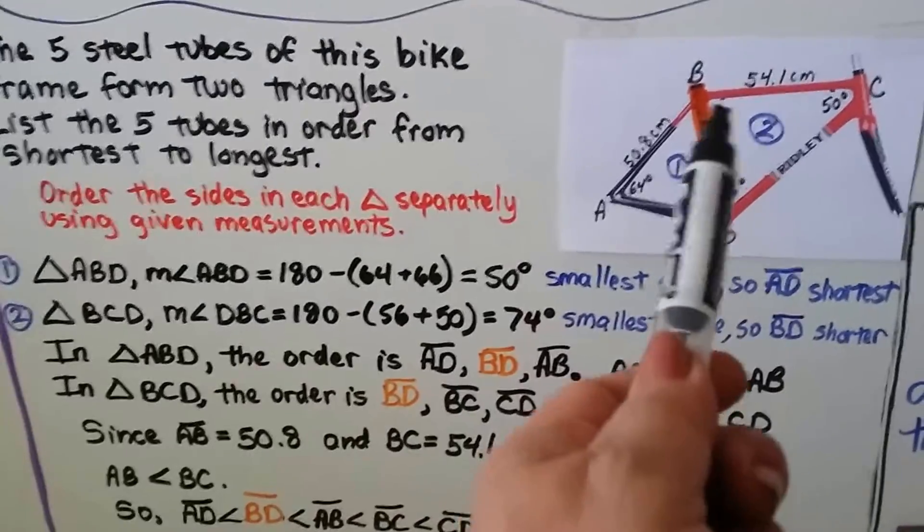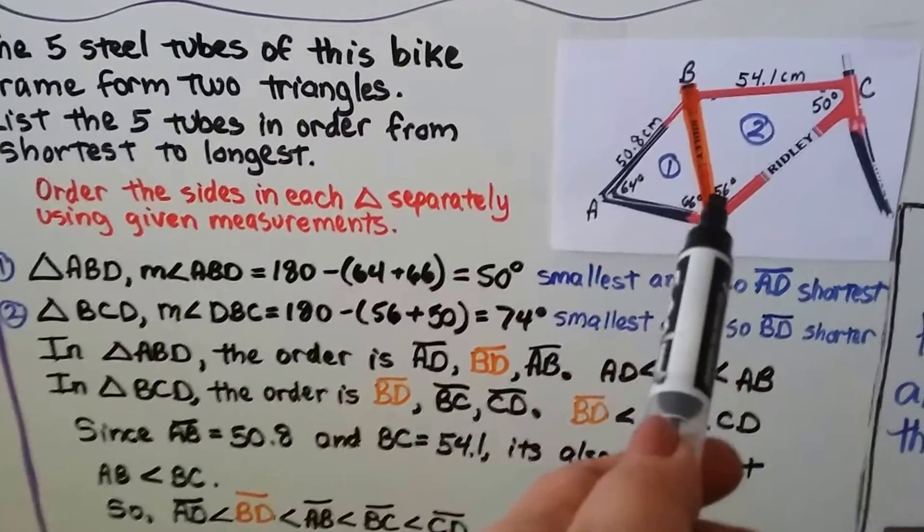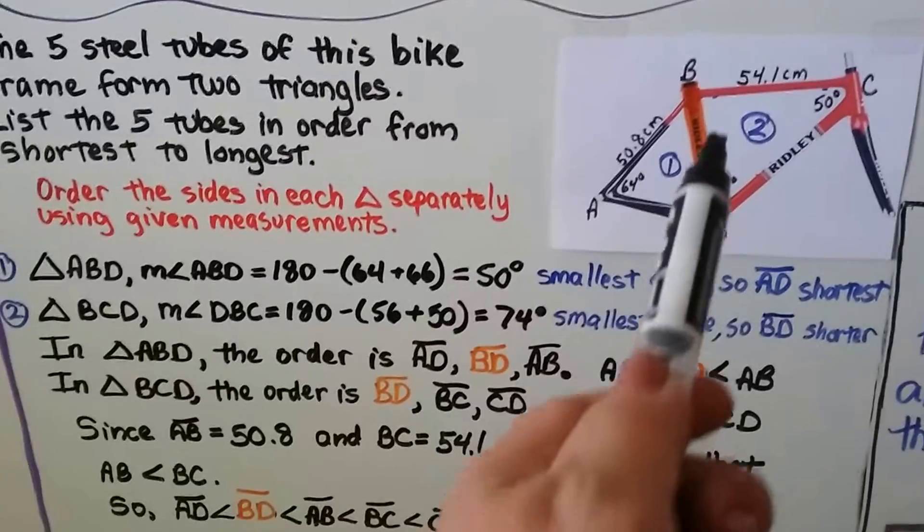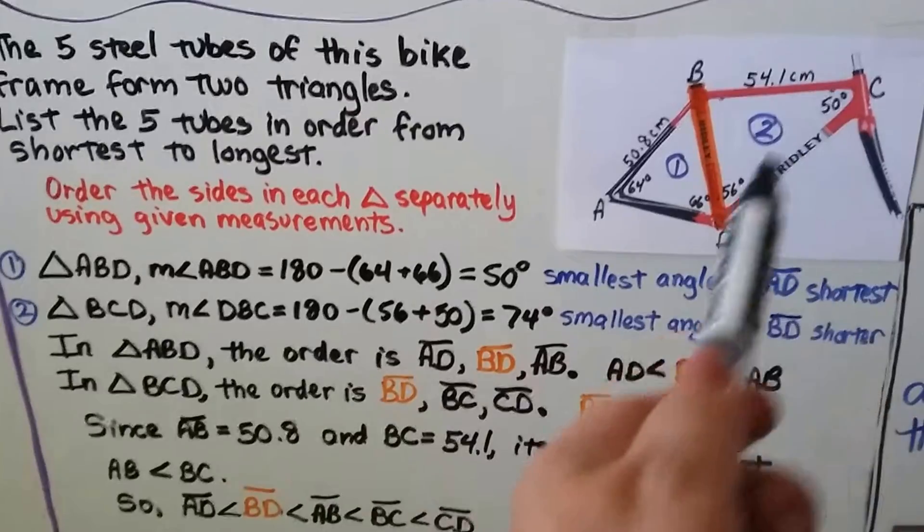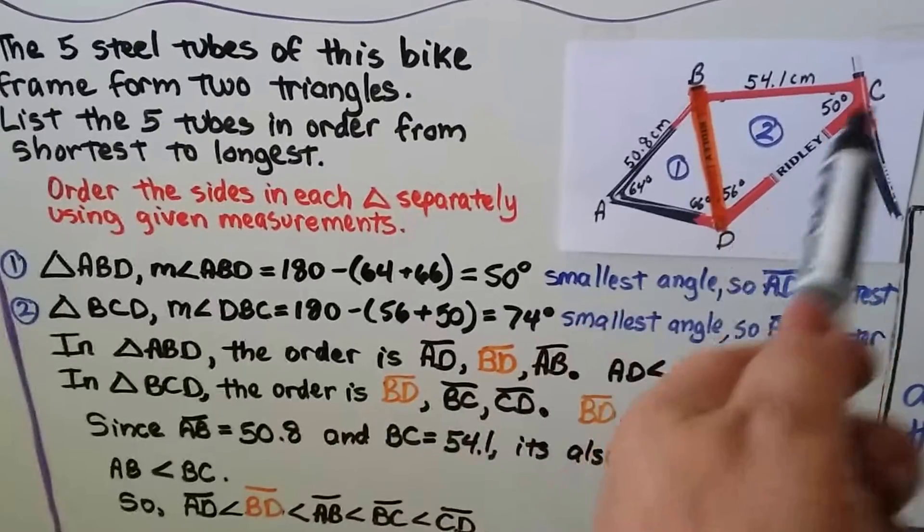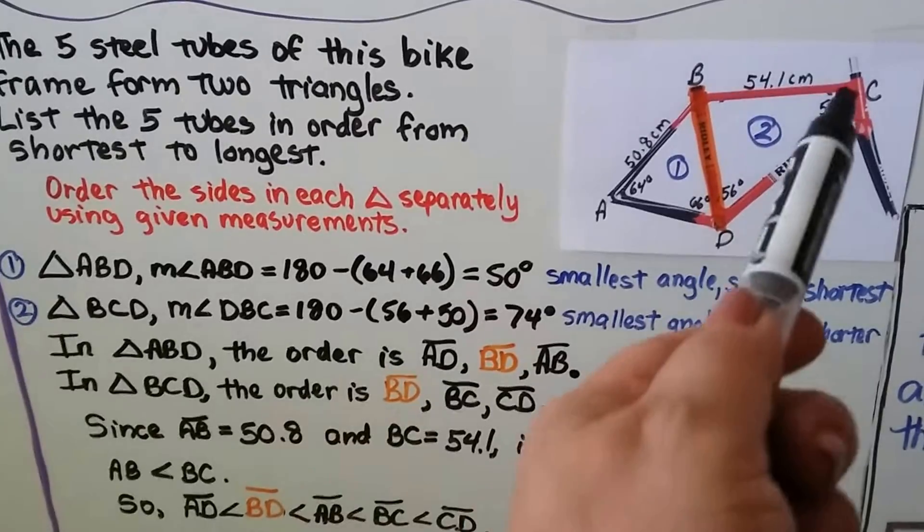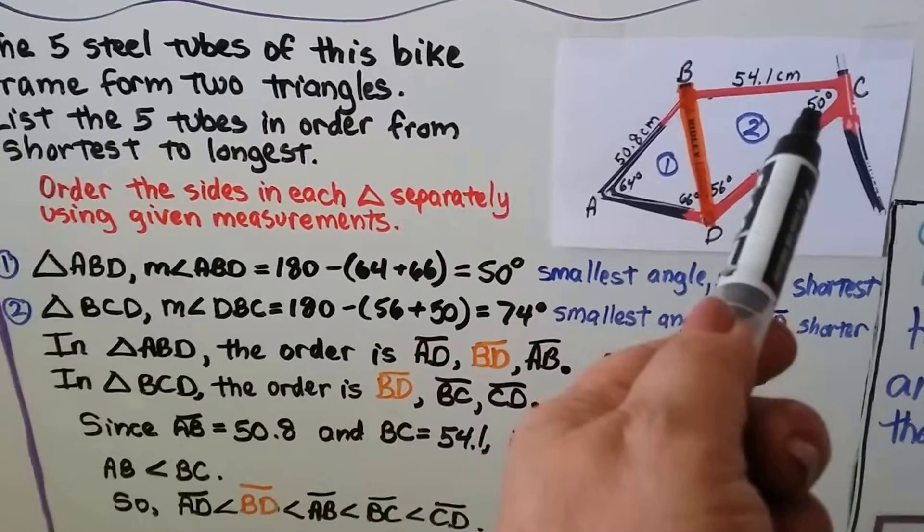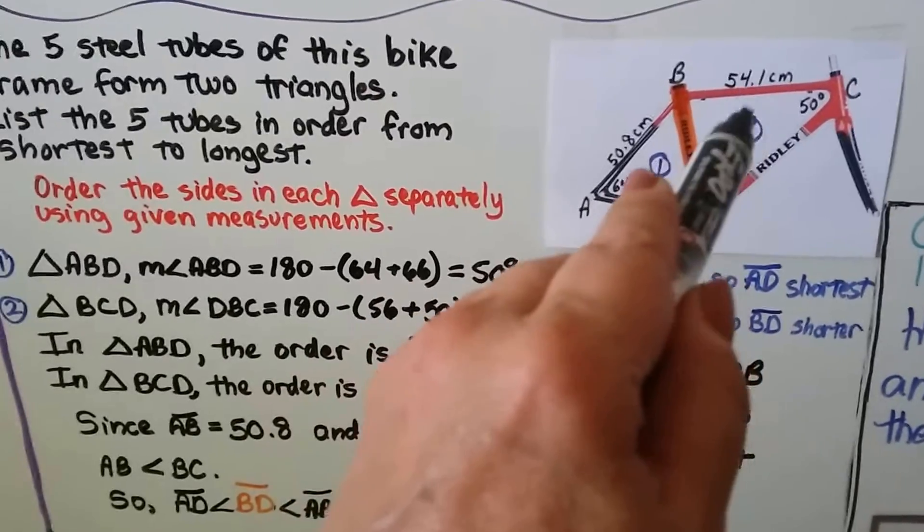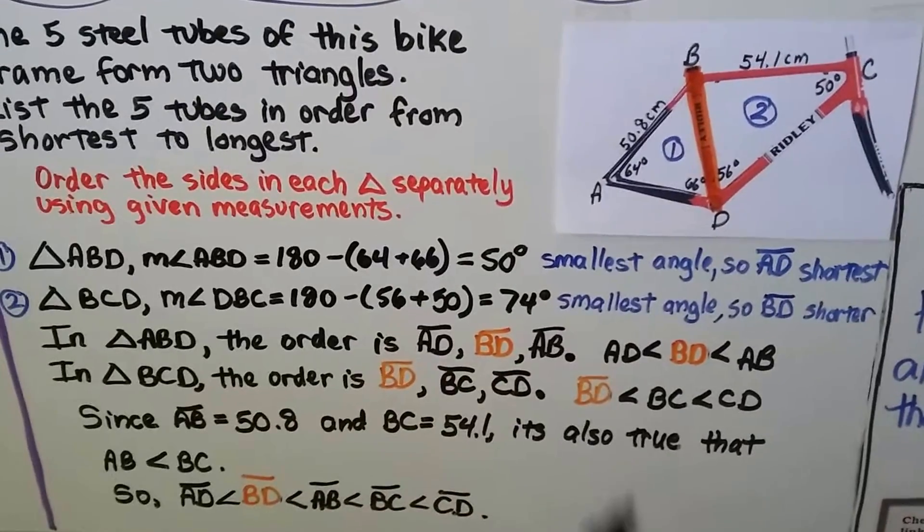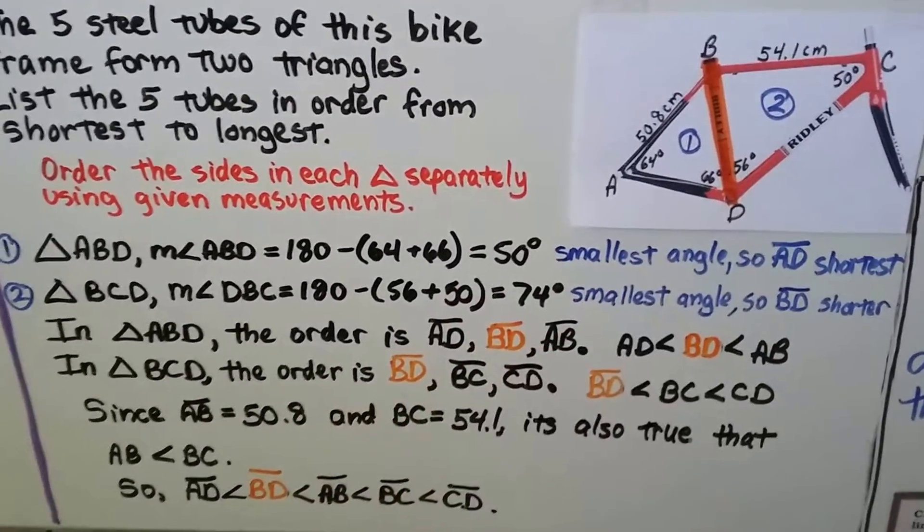For this one, we're missing this angle measure, so we can do 180 minus 56 plus 50, and we find out that that's 74 degrees. Because this is the biggest angle, that's got to be the biggest length. And we have 50 degrees and 56, so because that's 50, that means BD is the shortest length for this triangle. So now we've got AD is the shortest one for this triangle, and BD is the shortest one for that triangle.